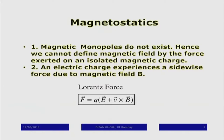Remember we defined the electric field by saying what is the force it exerts on a charge Q: electric field E times Q is the force that a charge Q experiences in an electric field. I cannot give you the same definition here because there are no magnetic monopoles known to exist. There is no theoretical reason why magnetic monopoles — an isolated magnetic north pole or south pole — cannot exist.